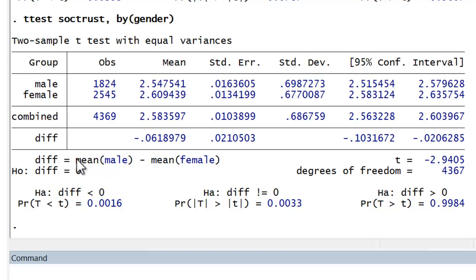Alternatively, if we had specified that males would have a higher level of social trust than females, we would expect the difference to be greater than zero. And this would be our alternative hypothesis. And this would be our p-value of reference.